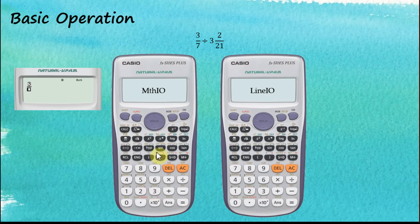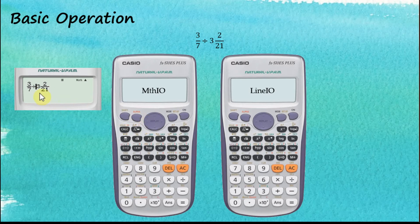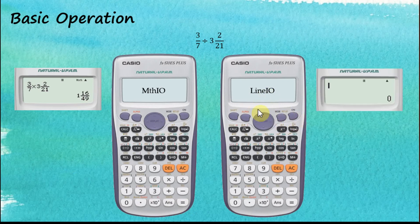We enter 3 over 7, then divide, and after that we have a mixed number, so we press Shift then fractions for the mixed number container and enter 3, 2, 21, then equal. The answer is 9 over 65. If we change our mind and want multiplication instead of division, we use the right arrow key to go back, move the cursor in front of the division sign, delete it, replace it with multiplication, and press equal to get the new answer.